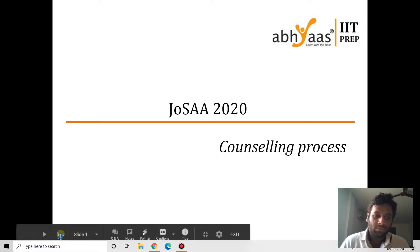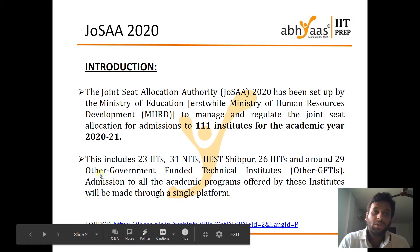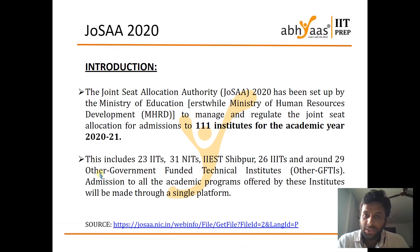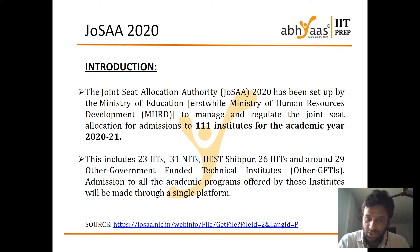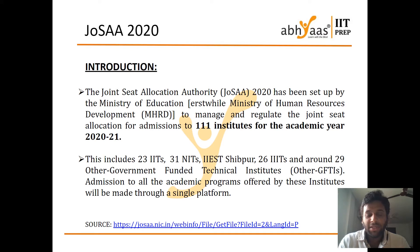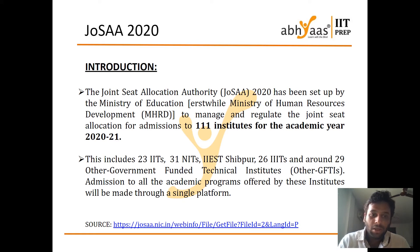JOSAA - Joint Seat Allocation Authority - this time has given all the admissions into one portal and 111 institutes are participating in it. This 111 comprises of 23 IITs and 31 NITs, IIEST Shibpur, 26 IIITs, and around 29 to 30 other government funded technical institutions. You can check the seat matrix and all those things in the given hyperlink in the source.